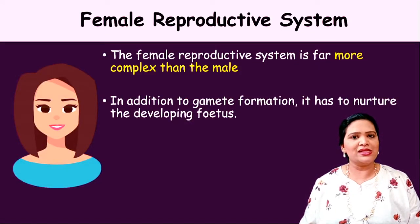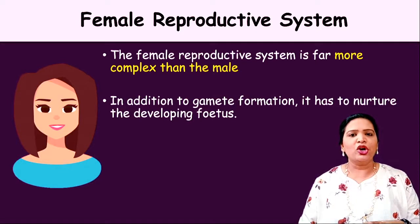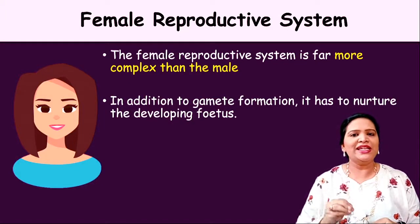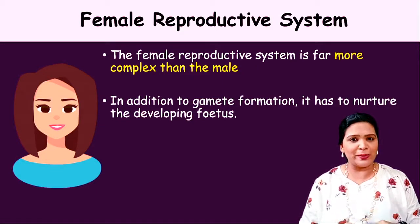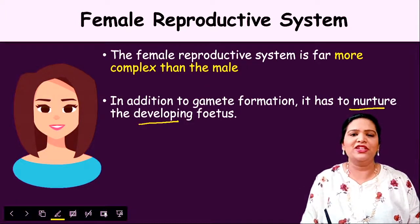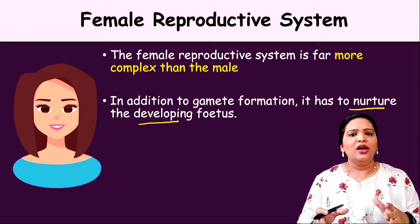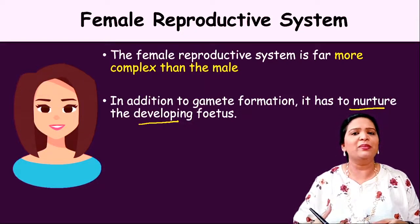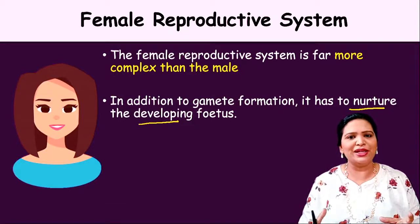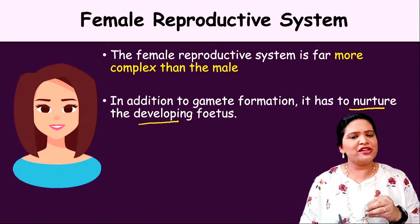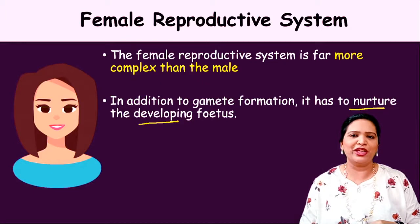Compared to the male reproductive system, the female reproductive system is more complex. The male reproductive system's function is to produce gametes — that is sperm production and insemination. But the female reproductive system has to produce the female gamete (the ovum), nurture the developing fetus inside the uterus, and support full growth until parturition. That is why the male reproductive tract is comparatively simpler.